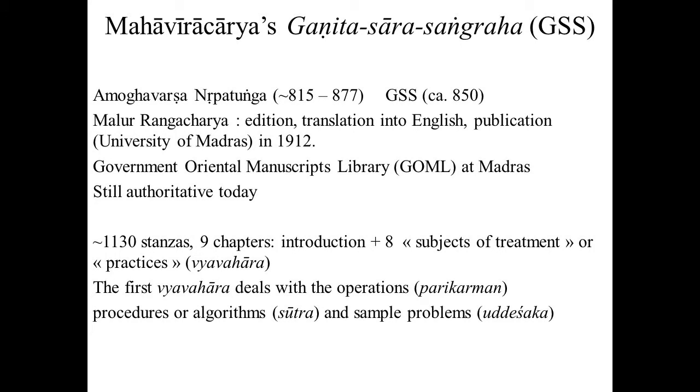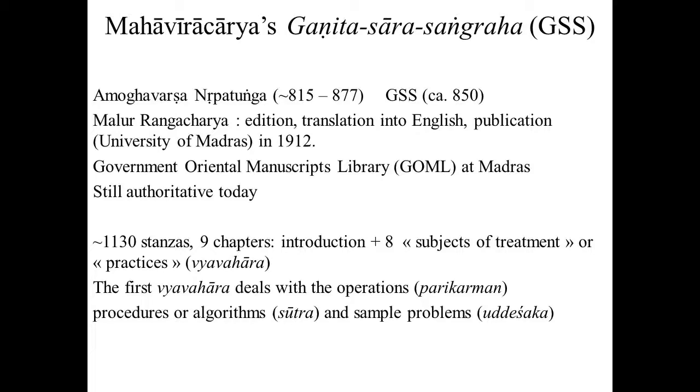The Ganita Sar Sangraha is a very significant treatise on mathematics composed by Mahaviracharya, a Digambar Jain Acharya living in South India in the 9th century. We know this date with fair accuracy as the first chapter contains verses praising King Amogavarsha. The text was discovered by Professor Rangacharya, who had chanced upon some manuscripts in the Government Oriental Manuscript Library at Madras, where he was the curator. He translated and published the text in 1912, and that edition is still authoritative today.